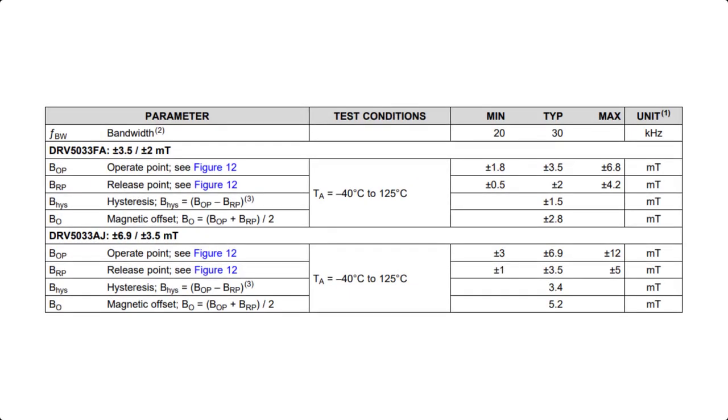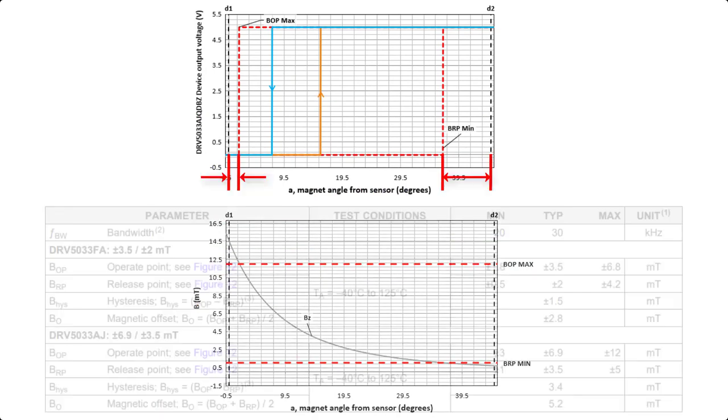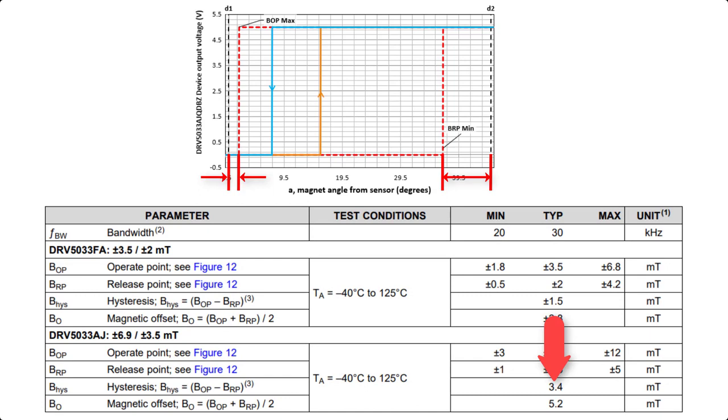Therefore, we consider the DRV5033-AJQ-DBZ with the higher thresholds. Despite this improvement, it still doesn't provide a lot of extra margin due to the hysteresis region size increasing.